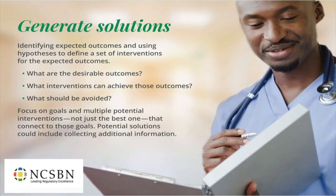In our clinical judgment measurement model, we're on the fourth box out of six: 'generate solutions.' It's about thinking about client needs, what kinds of things might help, and what kinds of things wouldn't help and might even make things worse. It's about what we're hoping to accomplish, what the goals might be, and what ingredients in the plan of care might get us there.